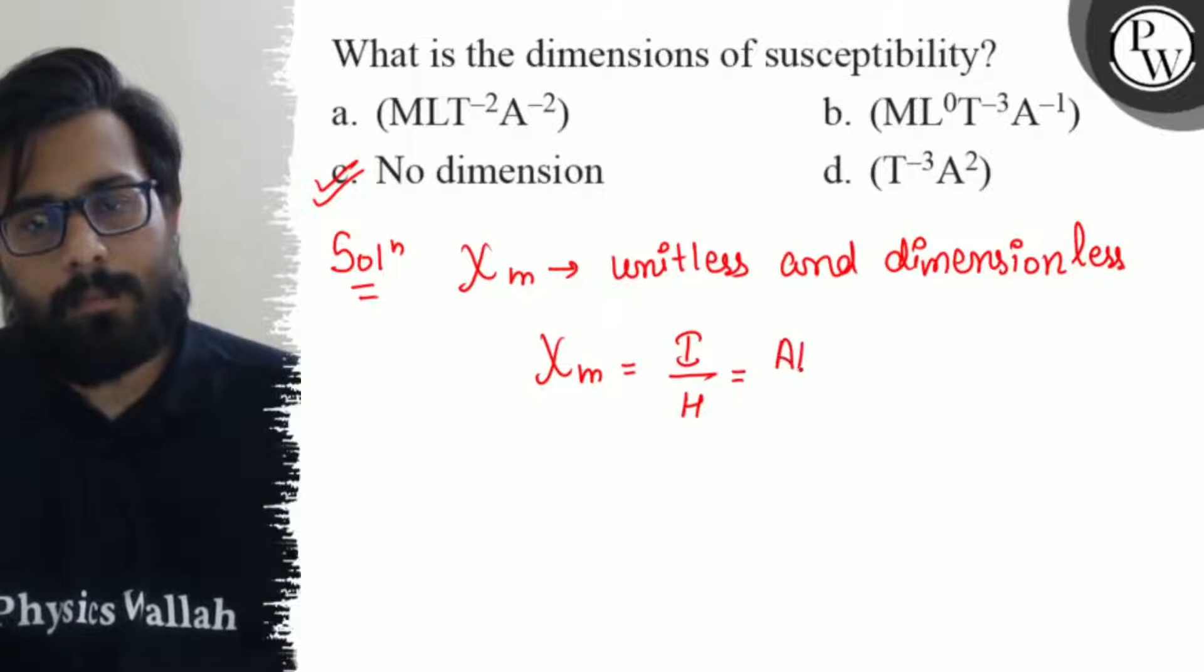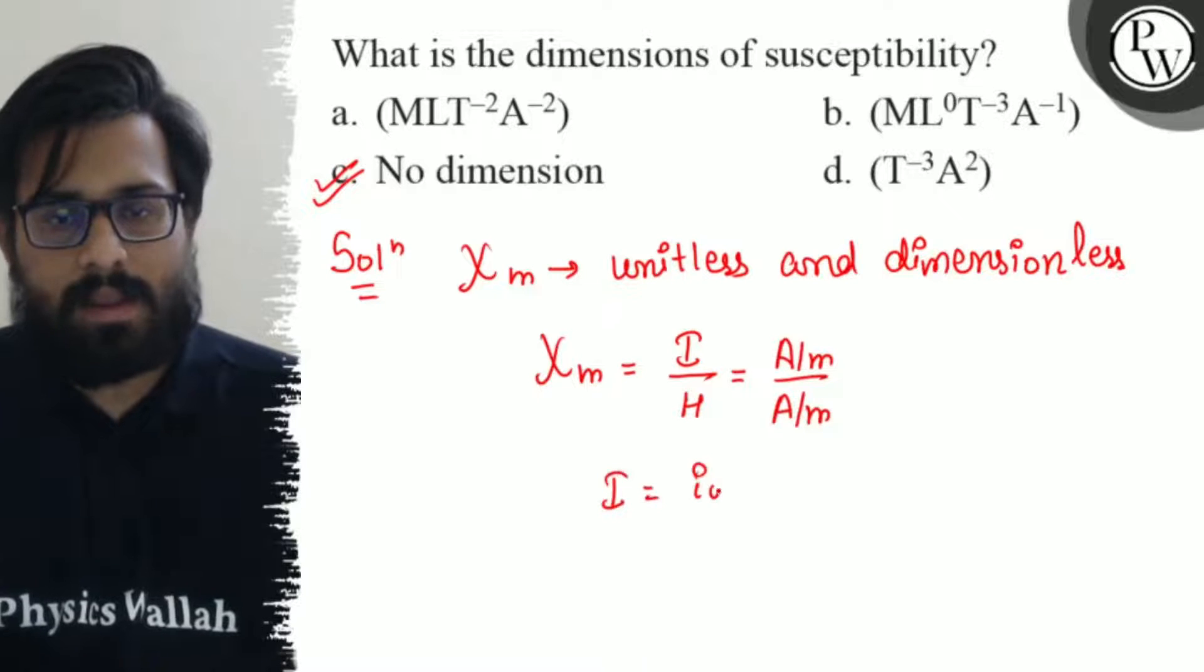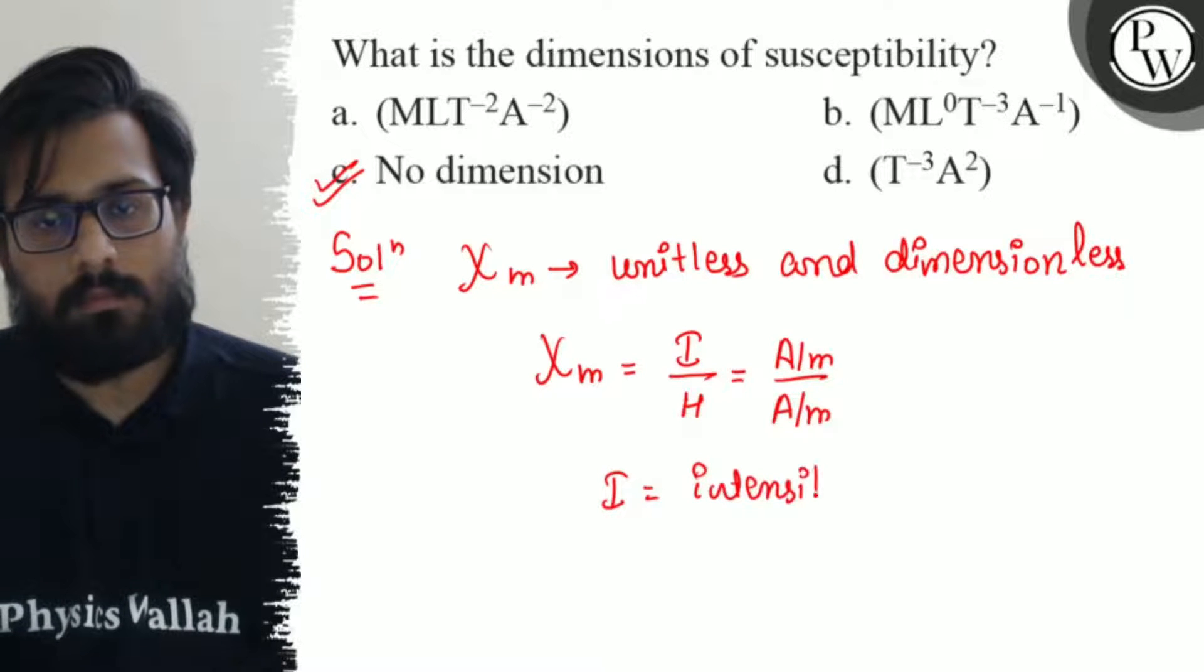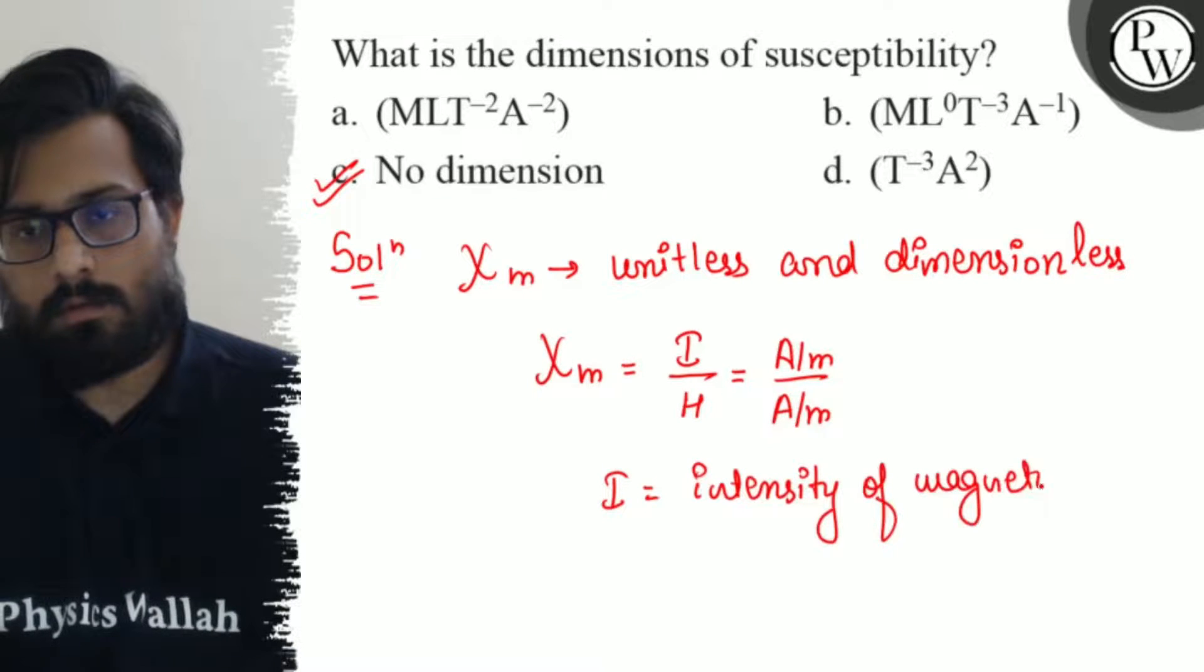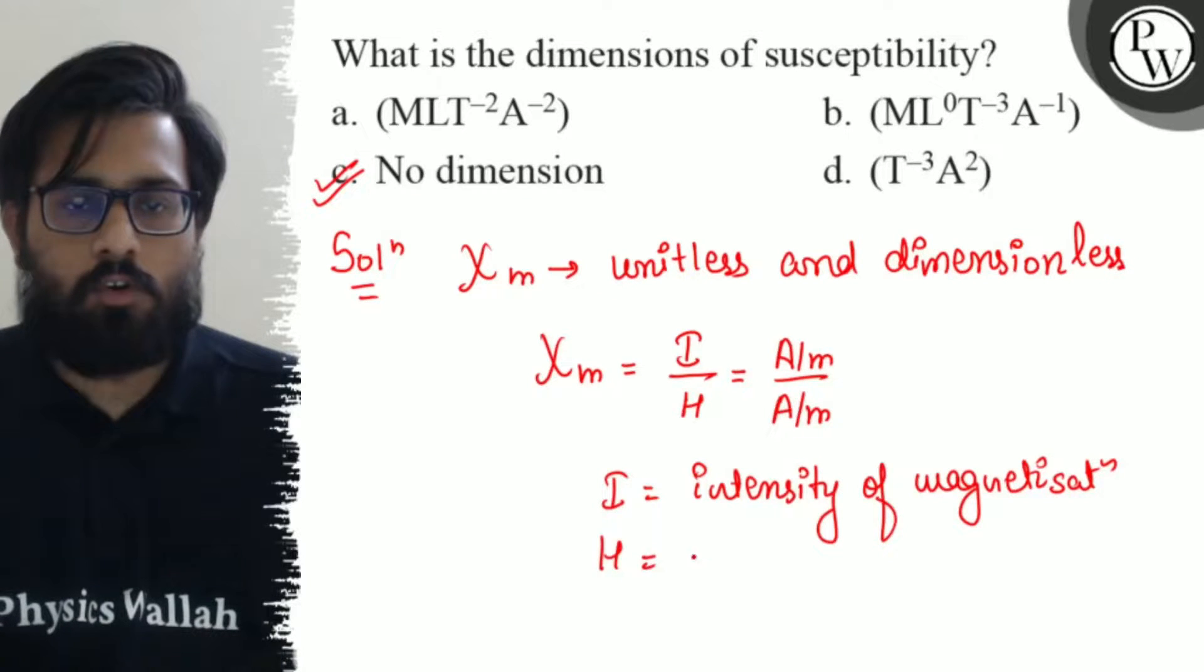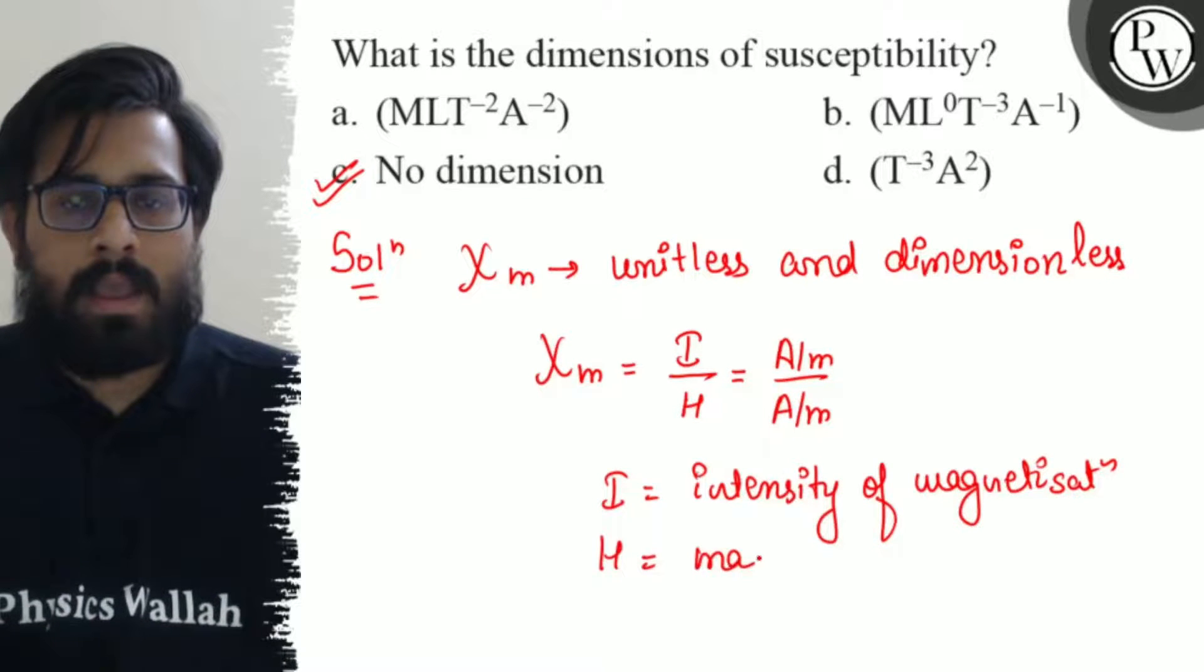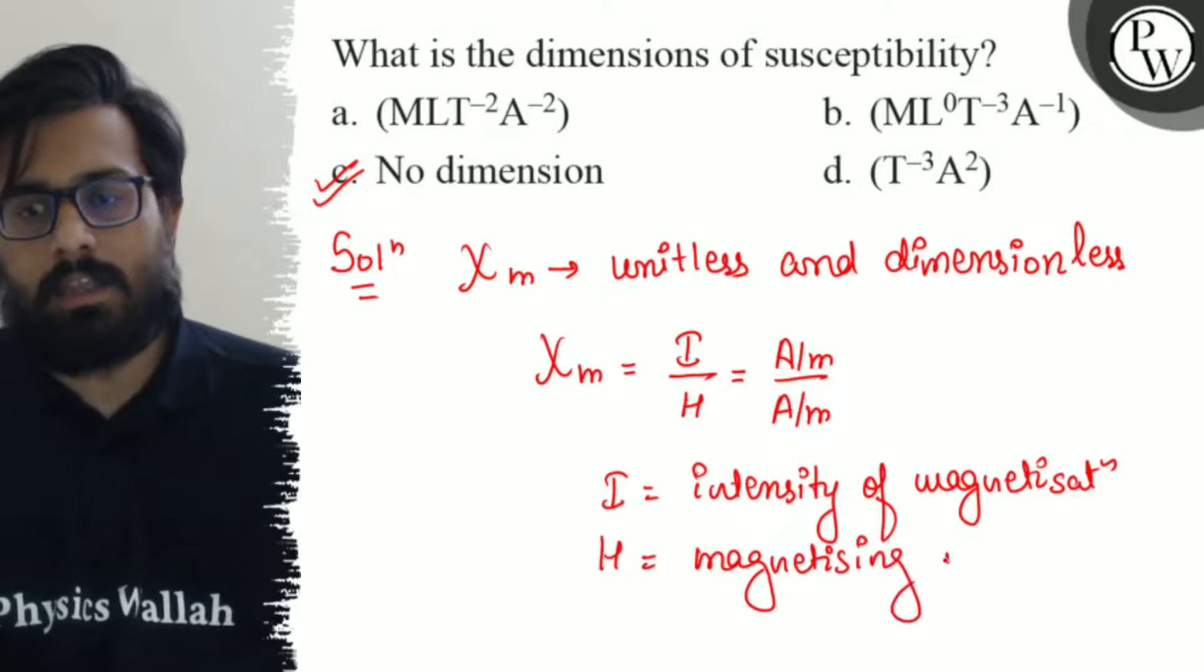Both have the unit of ampere per meter. I is the intensity of magnetization with the unit of ampere per meter, and H is magnetizing intensity with the unit of ampere per meter.